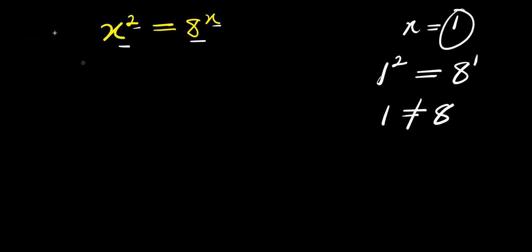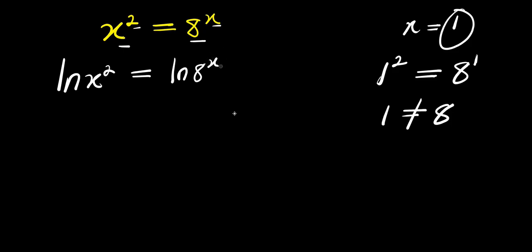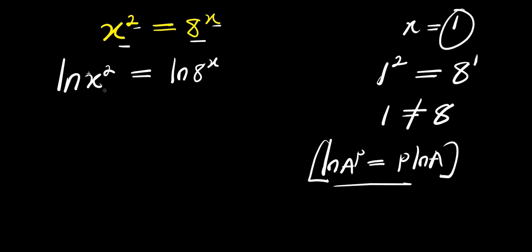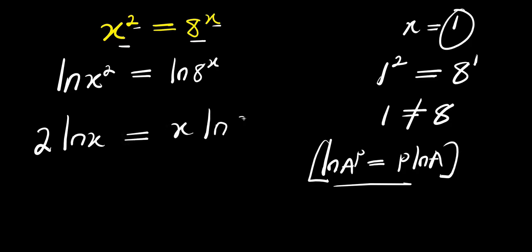So let's apply natural log. Natural log of x power 2 equals natural log of 8 power x. Using the rule that natural log of a power b equals b times natural log of a, we have 2 times natural log of x equals x times natural log of 8.